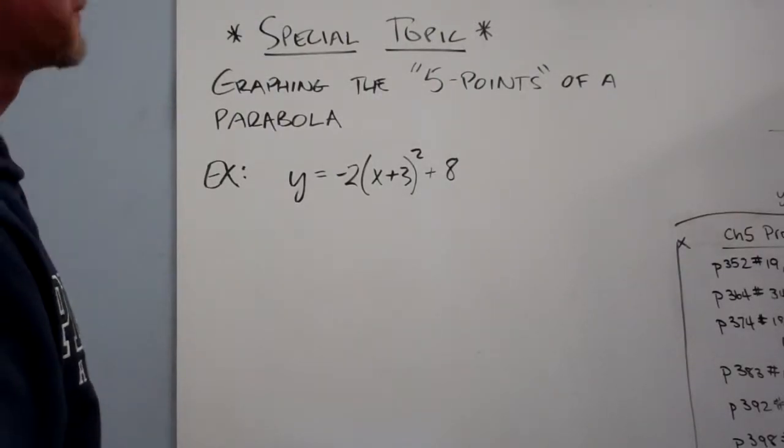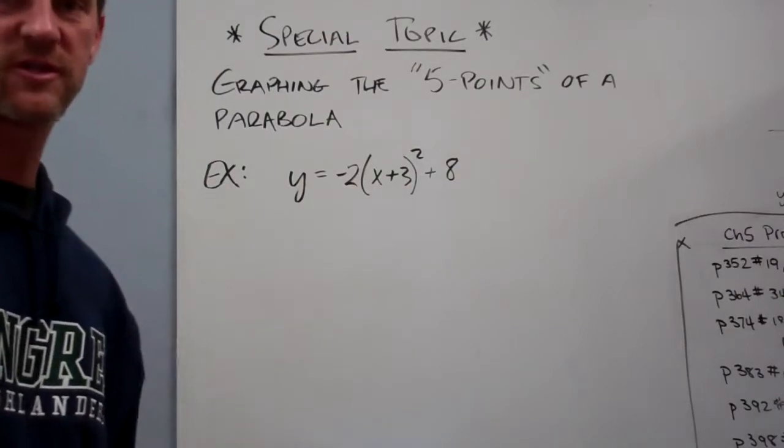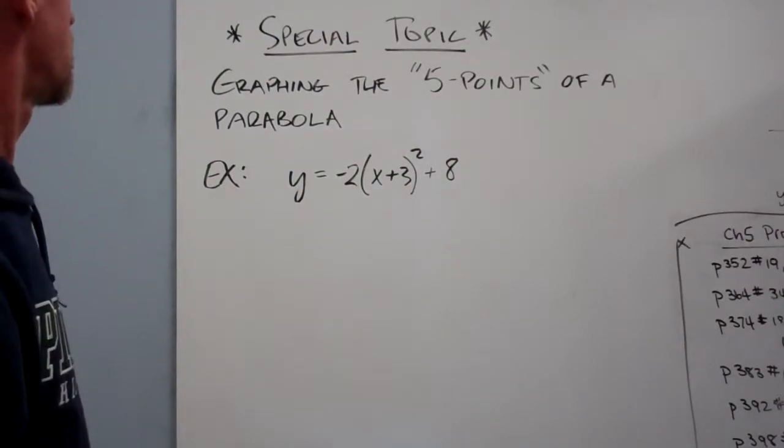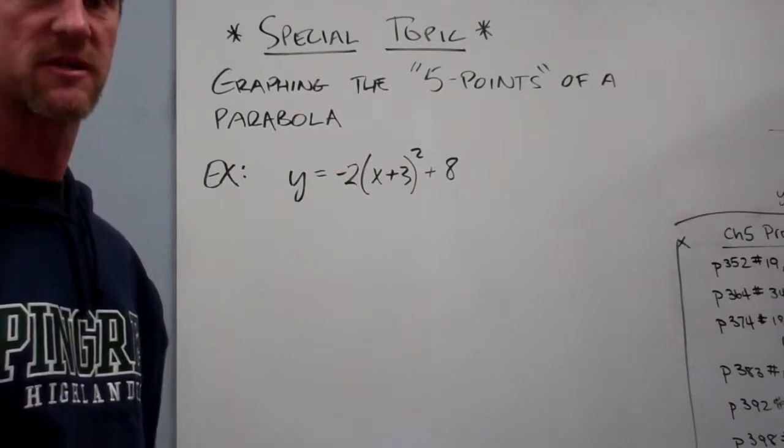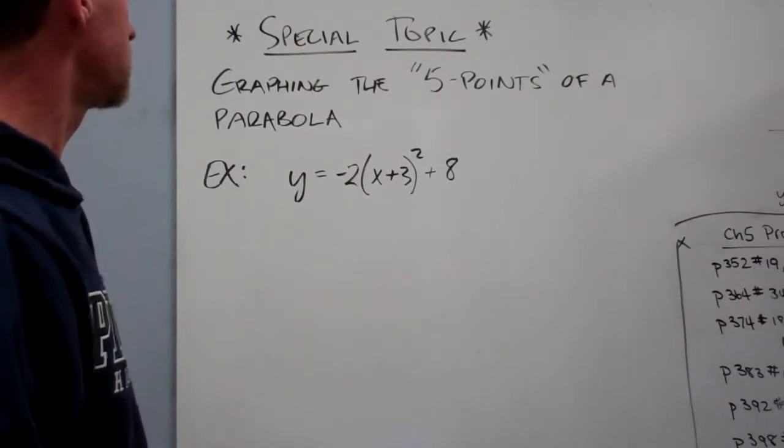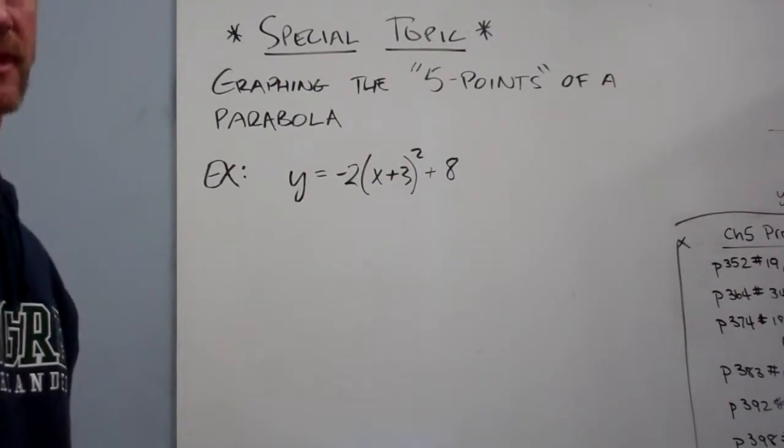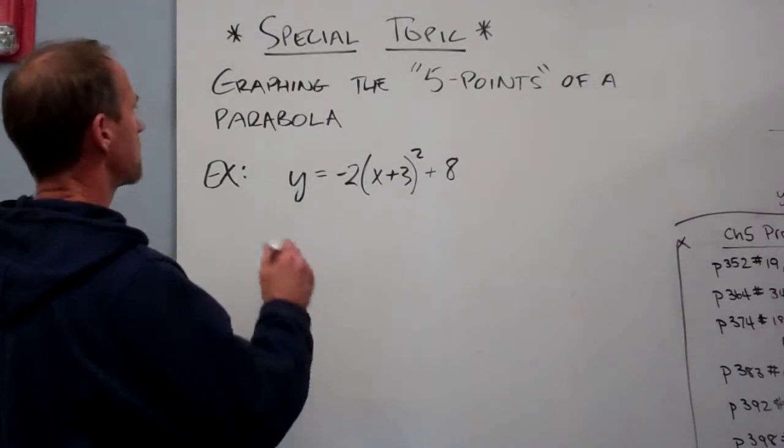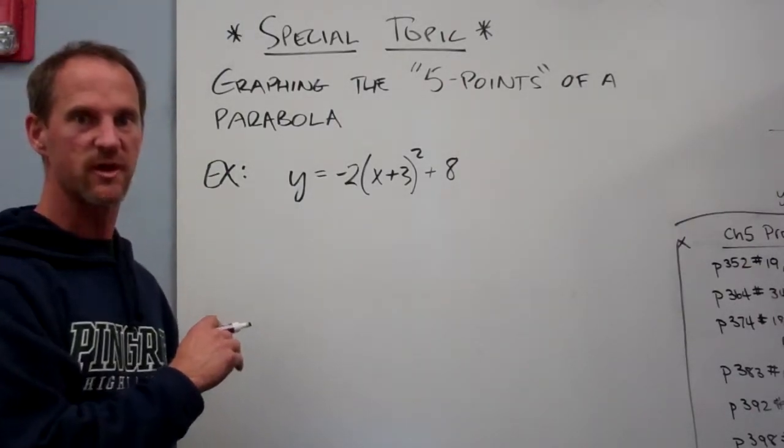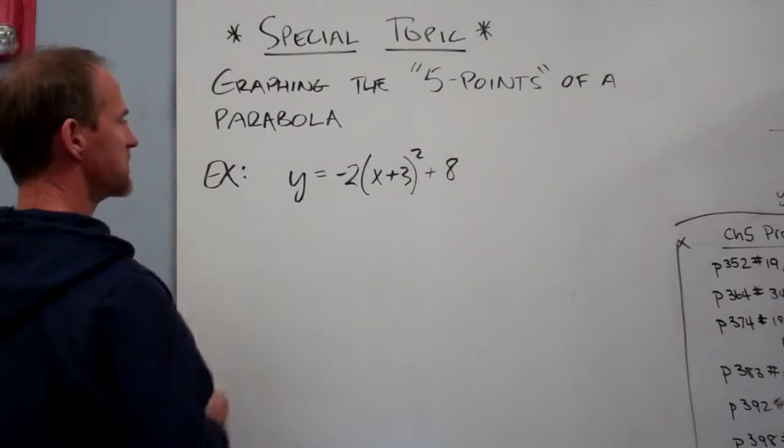We are going to do the first of a couple of special topics for this chapter. This is how we graph parabolas without a calculator, finding five key points. So we have two examples, one a little bit easier than the other. We'll start with the easy one.